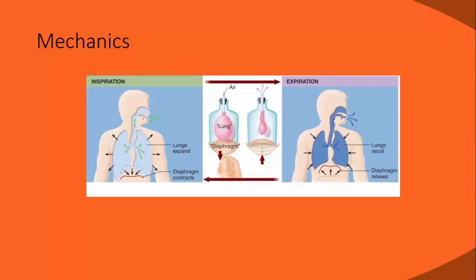This diagram from one of your textbooks shows how pressures are going to change. Think of this as essentially a bottle with a false bottom — that's the diaphragm, basically a piece of rubber with a pull tab. On the inside is a straw with a balloon representing the lungs. What we find is that we have pressure gradients, and things generally move from areas of higher concentration to areas of lower concentration.